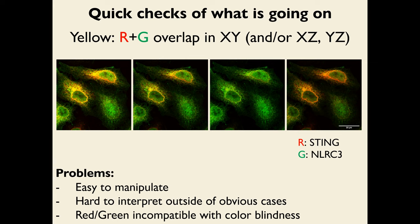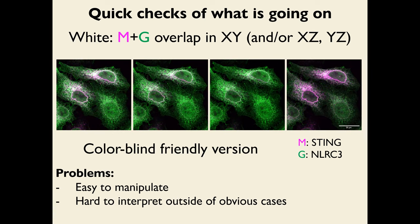The red-green display mode is also incompatible with colorblindness, which is fairly frequent. A colorblind-friendly alternative is to switch red to magenta, where overlap shows up in white — 'whiteness' instead of yellowness. But this has the same problems: easy to manipulate by contrast adjustment and hard to interpret outside of obvious cases.